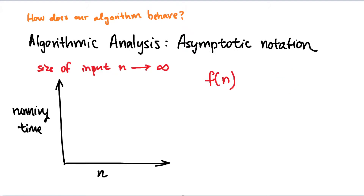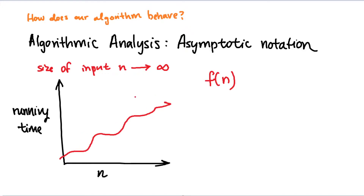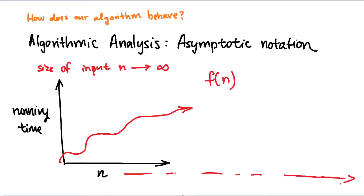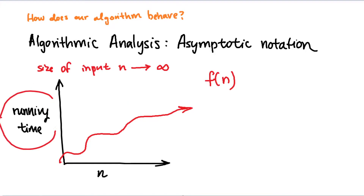If we represent the running time of f of n on this graph, it might look something like this. The concept is that as your n increases and gets larger and larger, we can start describing the general behavior of this graph using more general terms. The issue is that the more complicated our algorithm becomes, the more complicated it becomes to represent.